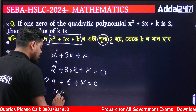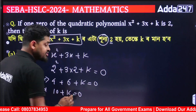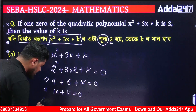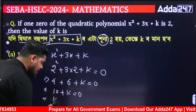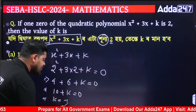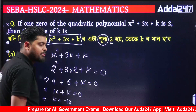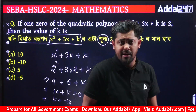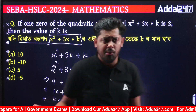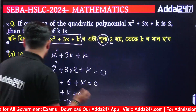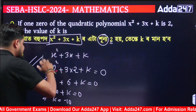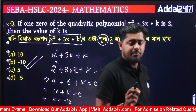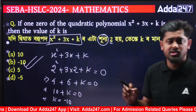Since k equals 0, and then you can say x equals 0, that means k equals 0. Option B is the correct answer.